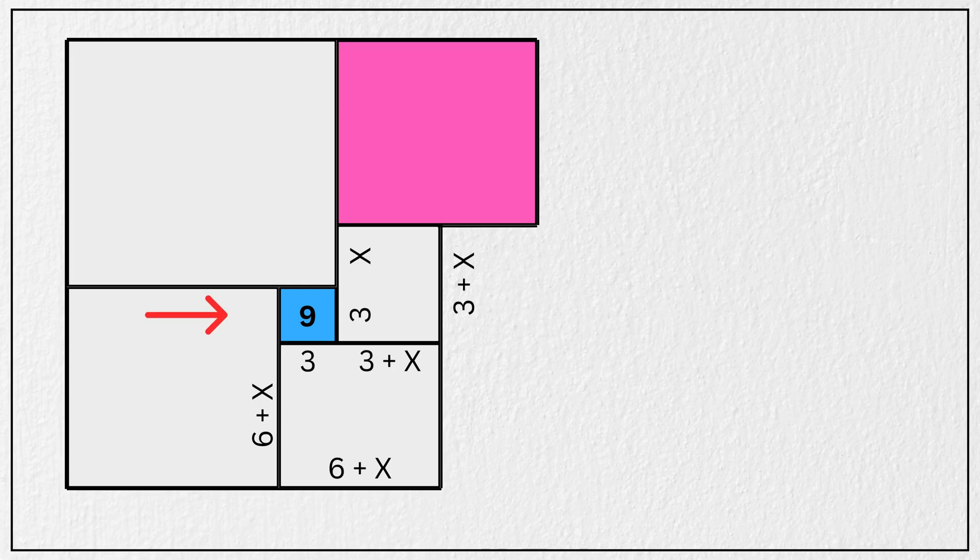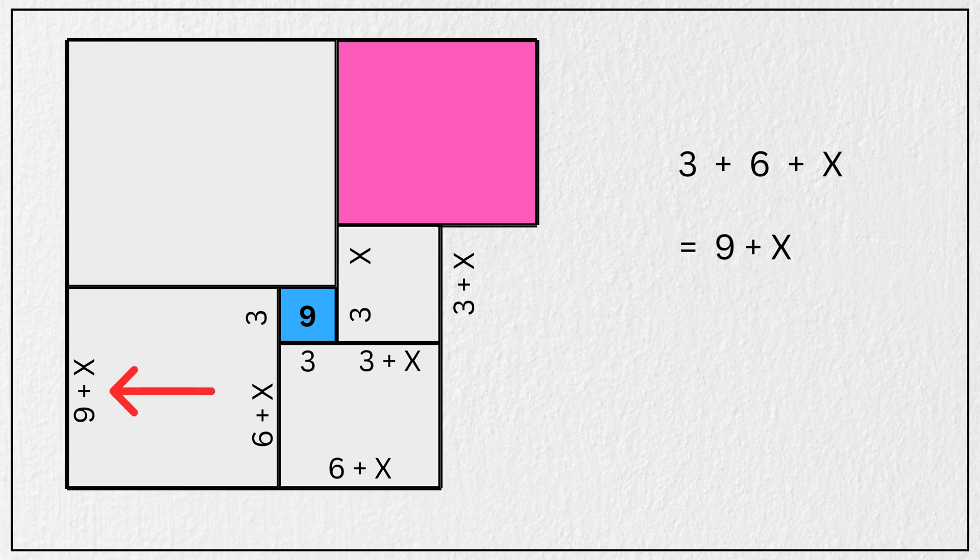Similarly, if this length is 3 units and this length is 6 plus x units, that means the total length of this square will be 3 plus 6 plus x units, which is 9 plus x units. So this is 9 plus x units and this is also 9 plus x units.